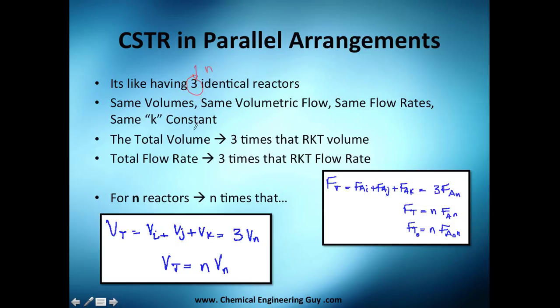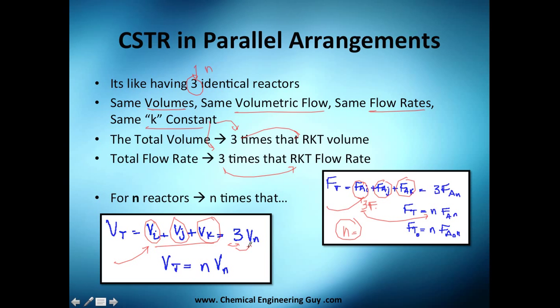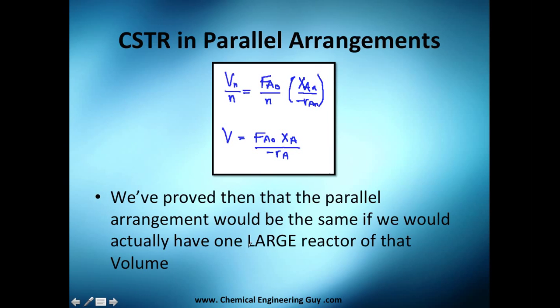Once again, it's like having n identical reactors - same volumes, same volumetric flows, same flow rates, same constant. It's 3 times that reactor volume or 3 times that flow rate. Look here, you will add this and this and this, but you know they are the same so it's 3 times that flow rate - or not 3 but n, where n is the number of reactors. Three is just the example. The same with the volume - volume of one tank, volume of second tank, volume of third tank. You know this is the same volume so it's 3 times that volume.